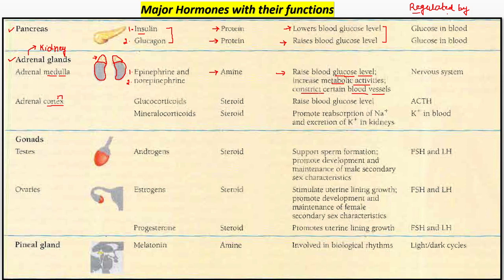Jab bhi zayadha glucose ka level chahiye, zayadha energy chahiye, zayadha metabolic activities chahiye — tab epinephrine jo hai, adrenal medulla se release hota hai. Iska regulation nervous system ke dwara hota hai. Norepinephrine ke saath mil kar ye heart rate ko aur blood ki pumping ko increase karta hai, blood pressure increase karta hai, fat ko breakdown karna, blood mein zayadha sugar level dena — taaki zayadha se zayadha body ko energy mil sake jab bhi zaroorat ho.